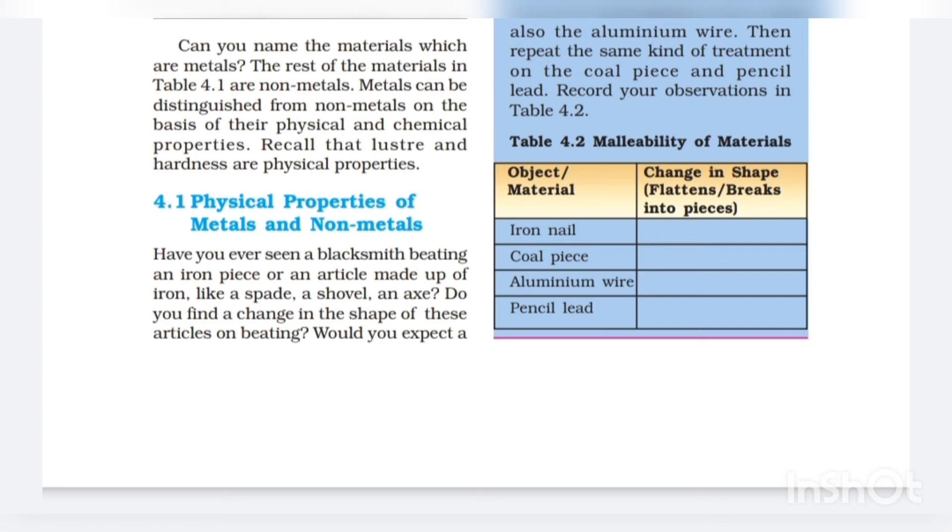Object/Material: iron nail, coal piece, aluminium wire, pencil lead. And its change in shape: flattens or breaks into pieces. So we have to give the changes of these in the column here. Try this experiment and try to observe all the things yourself.